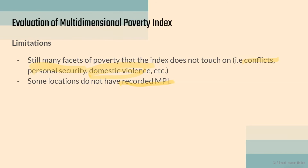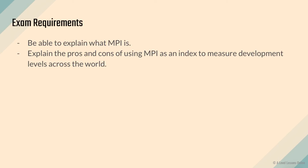Also, some locations do not have recorded MPI values. Certain closed-off areas are simply not accessed for measurement, meaning those areas are not entirely comparable with others. Additionally, more developed nations may not have recorded MPI because poverty is so low it's very hard to measure in the first place.